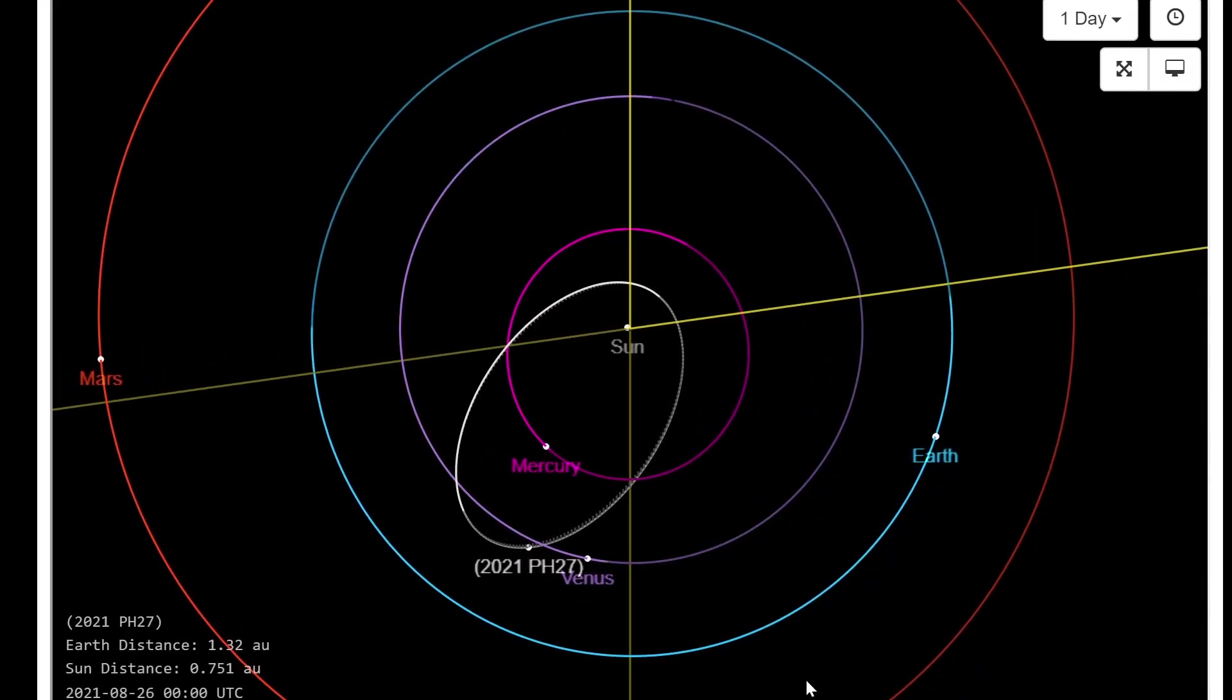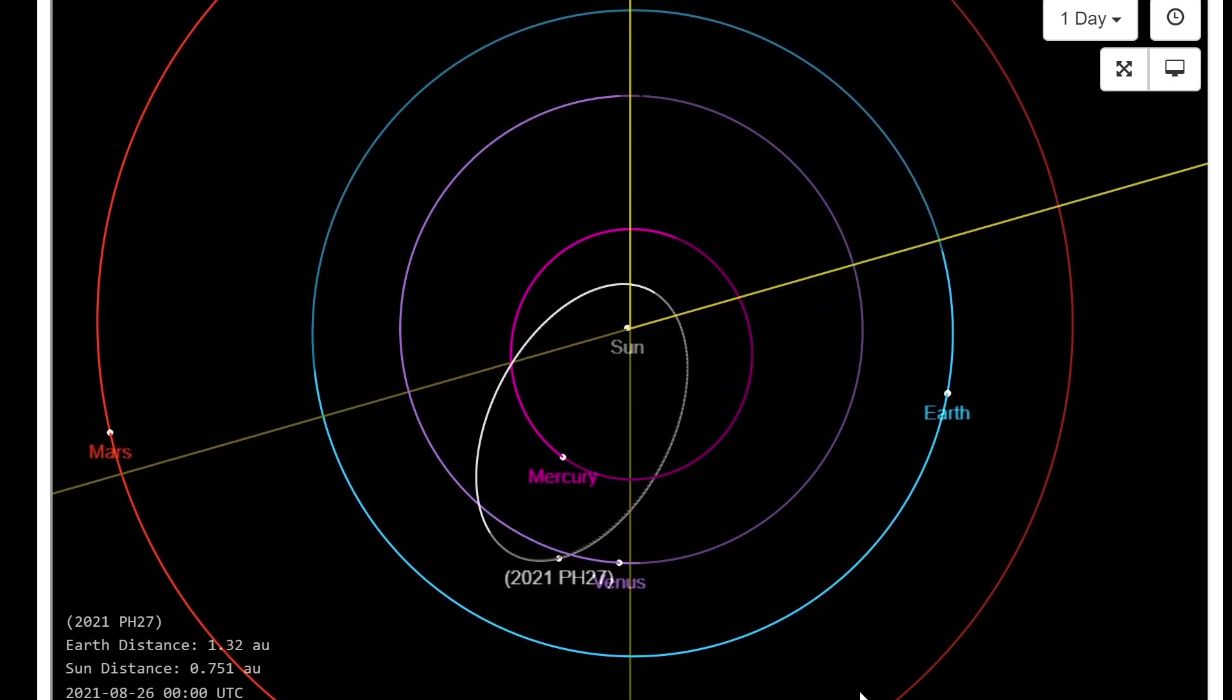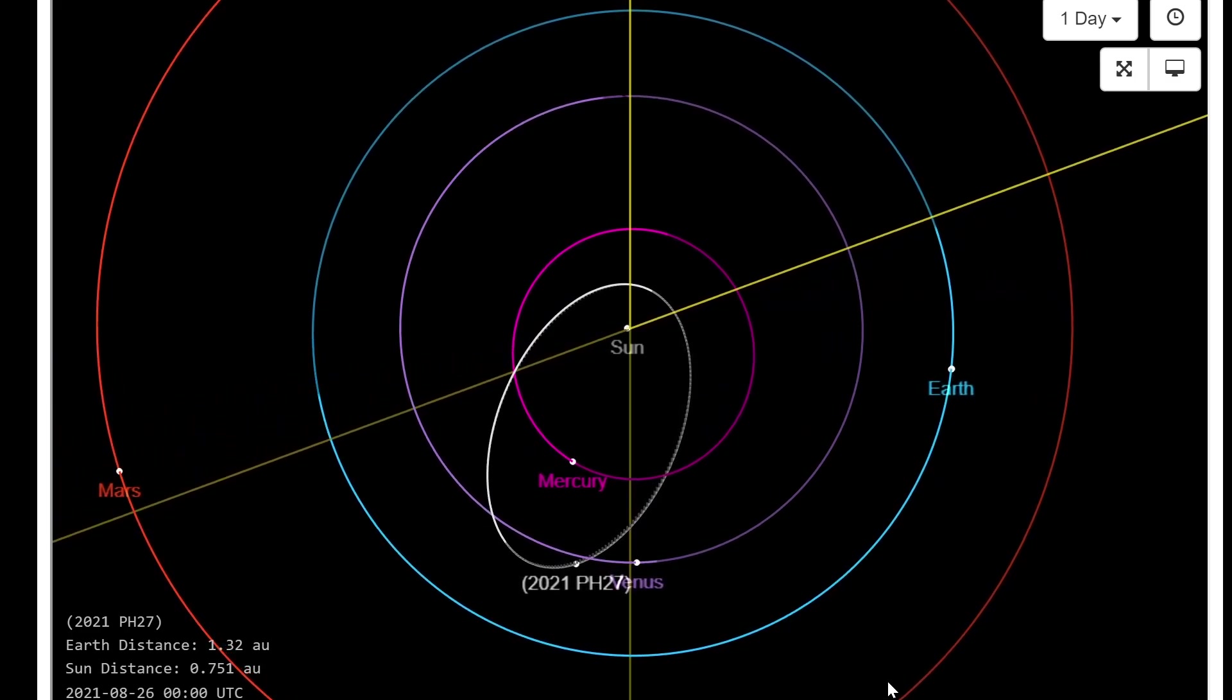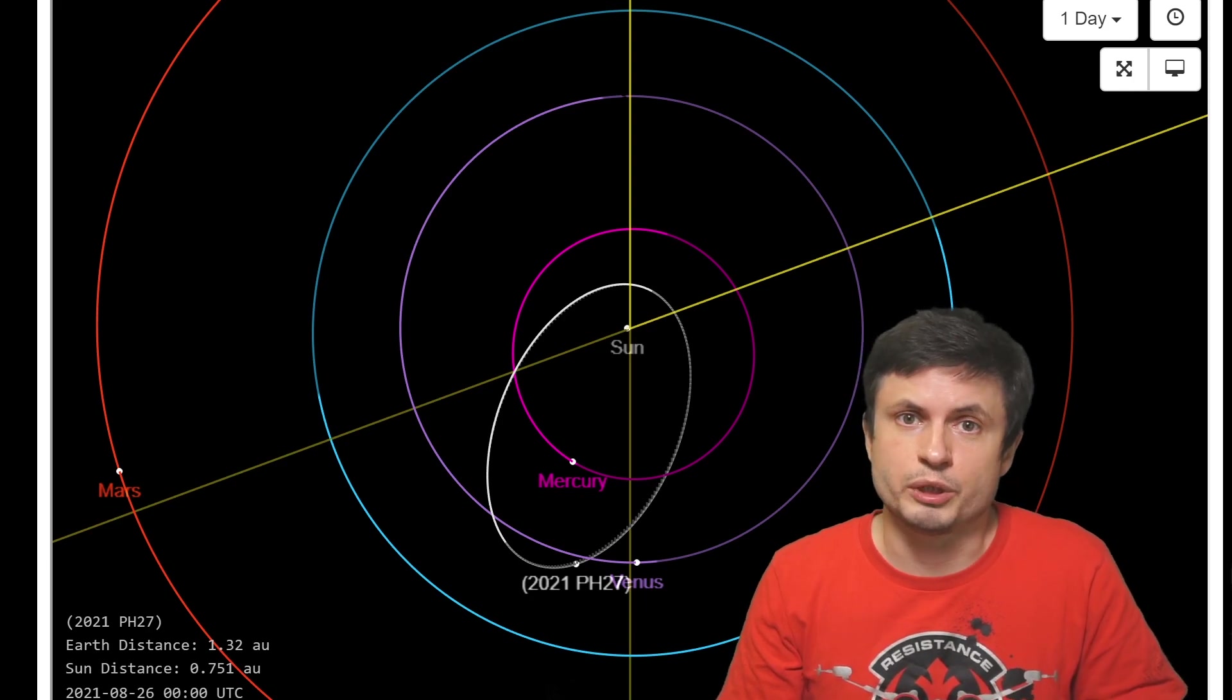An asteroid that takes approximately 113 days to complete a single orbit around the sun, making this the asteroid with the shortest orbit around the sun, and also potentially an asteroid that created a completely new group of asteroids that we didn't actually know existed.